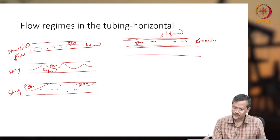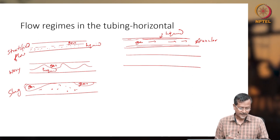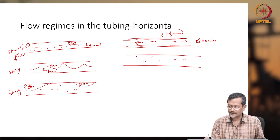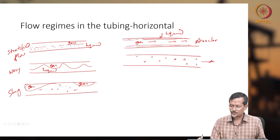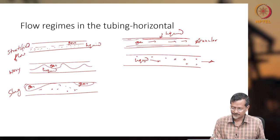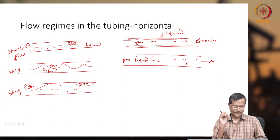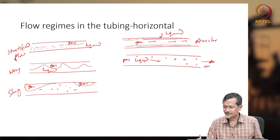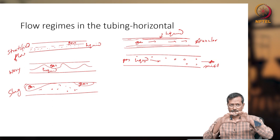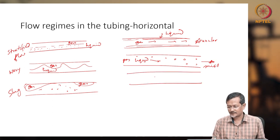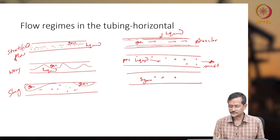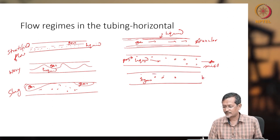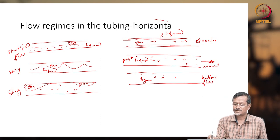In horizontal pipe annular flow, liquid soaks the upper and lower walls and gas creates its own path at the center. If you increase gas velocity even further, liquid particles break into very small droplets — this is mist flow, where gas is continuous and liquid forms a mist. And if you have small gas bubbles in liquid in horizontal pipe, that creates bubbly flow.